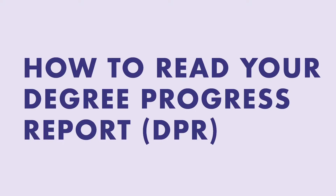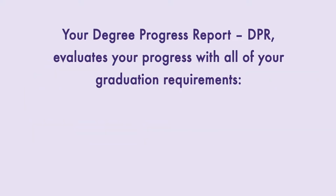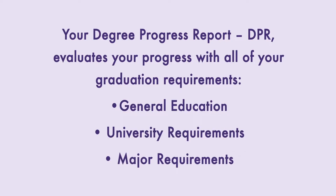Your Degree Progress Report, commonly known as your DPR, is an essential tool that evaluates your progress with all of your graduation requirements, including general education, university, and major requirements. It takes into account all of your coursework — courses in progress and completed courses from SF State — any units transferred in from other institutions, and any units from test credits. It also indicates which requirements are still outstanding.